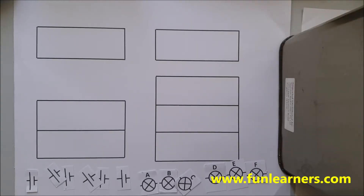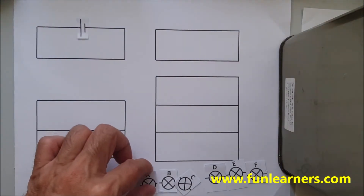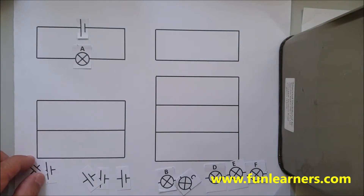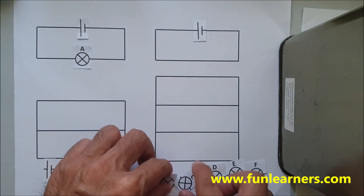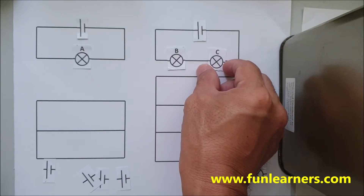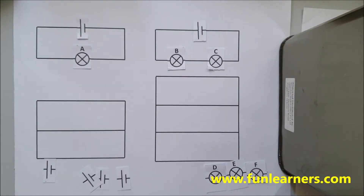Class, we are going to learn how to identify which light bulb will be brighter. The two variables will be the batteries and the number of light bulbs. Let's say we have a battery in a circuit with light bulb A, compared to another circuit with light bulb B and C. Which light bulb will be brighter — A, B, or C? We will use a ratio method to determine this.